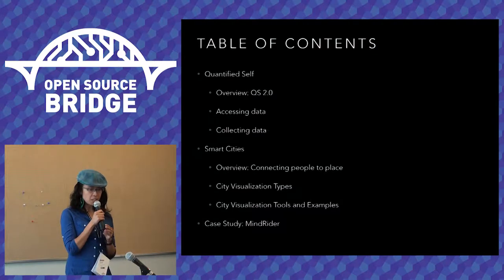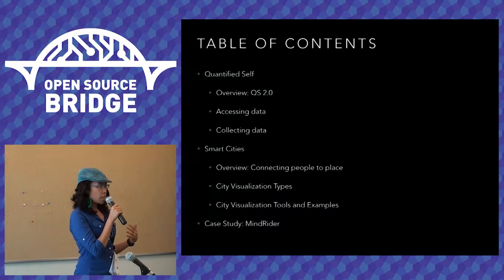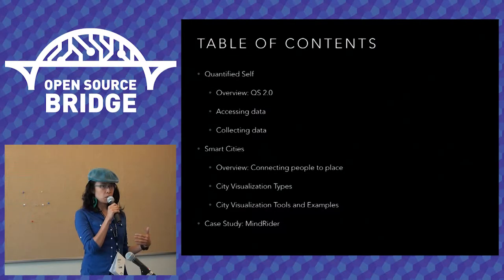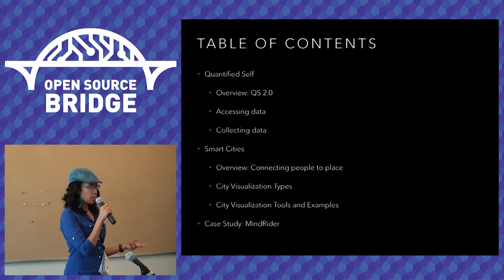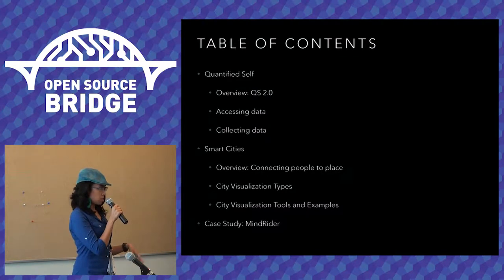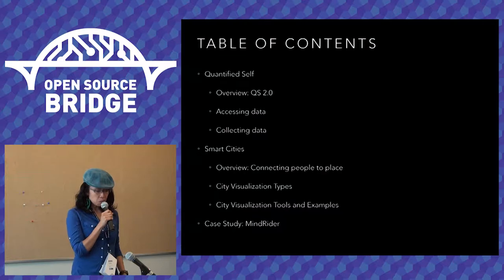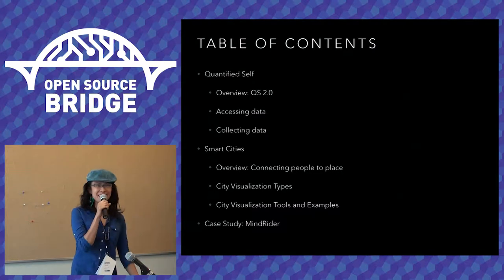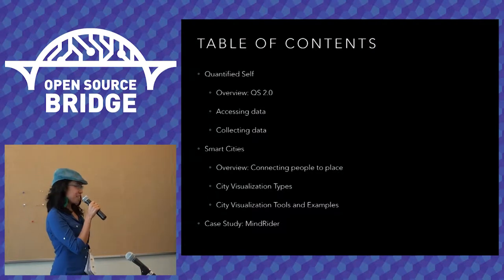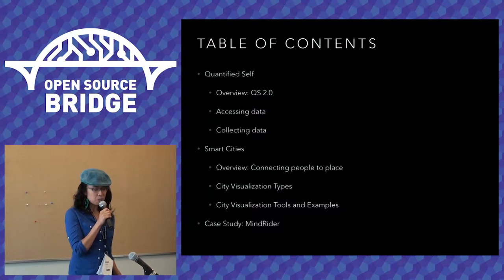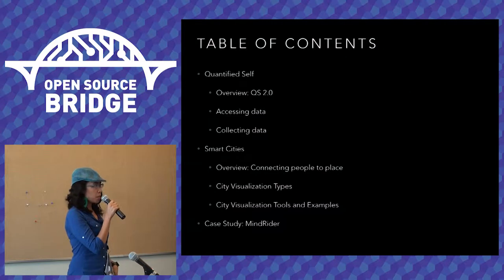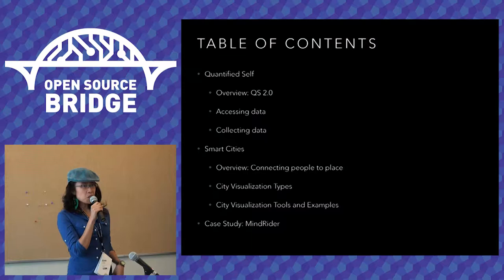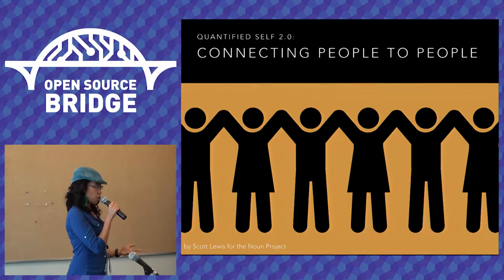The outline for today: I'll talk about quantified self — what it is, some tips for accessing data, and tips for collecting data — building DIY sensor systems from a citizen science perspective. Then I'll talk about smart cities and what that means to me, since both terms can be interpreted broadly. I'll also share examples from my classes. Then I'll break for Q&A, and if there's time, I'll go into a deeper case study with my project called MindWriter.